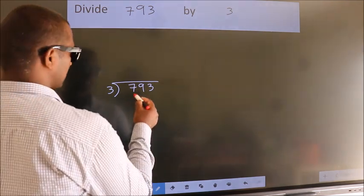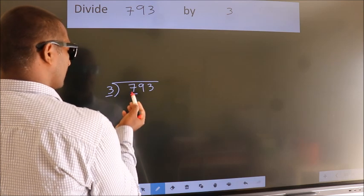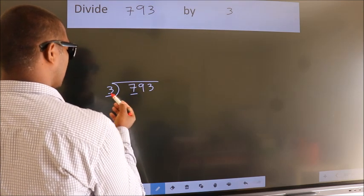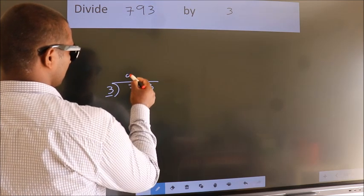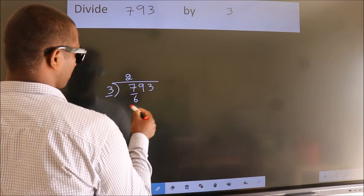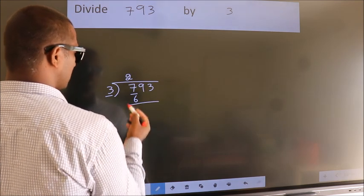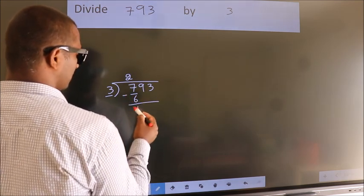here we have 7, here 3. A number close to 7 in 3 table is 3 2s, 6. Now, we should subtract. We get 1.